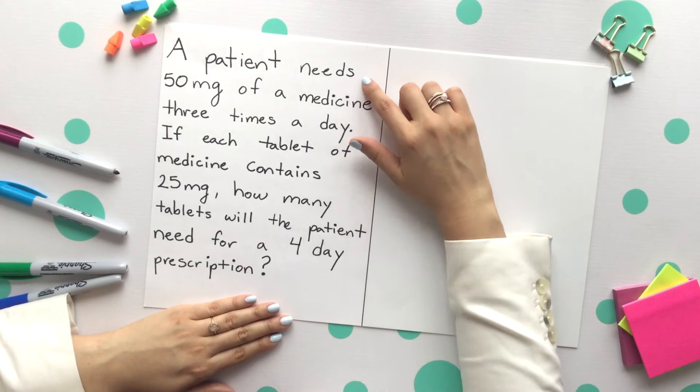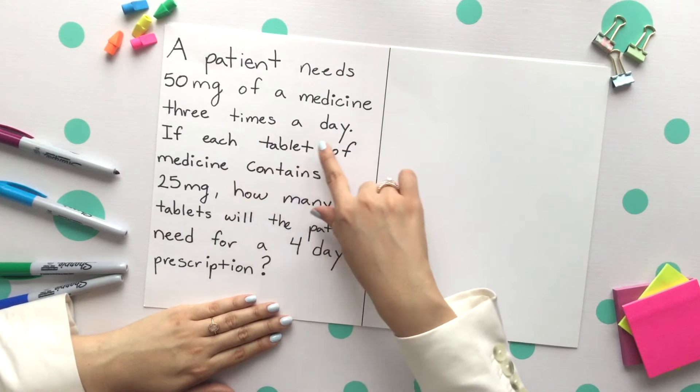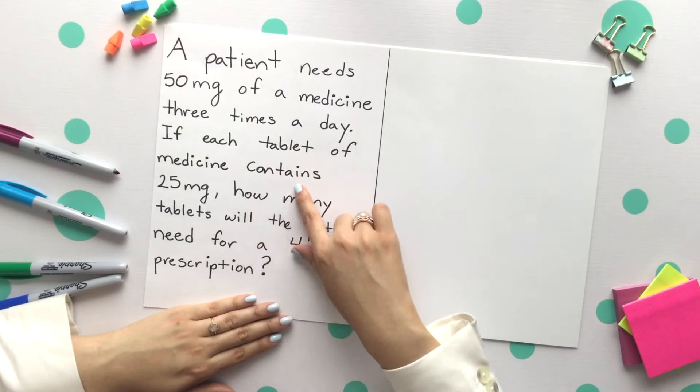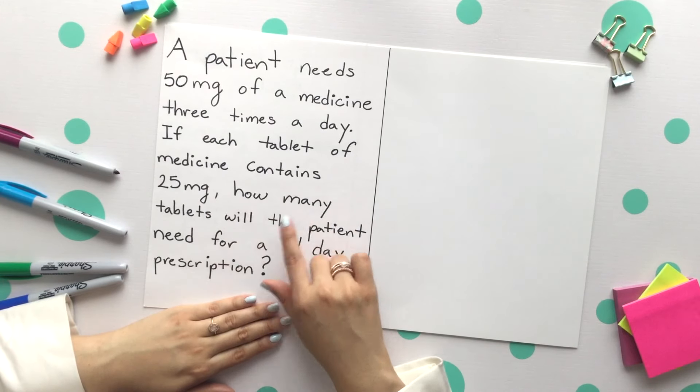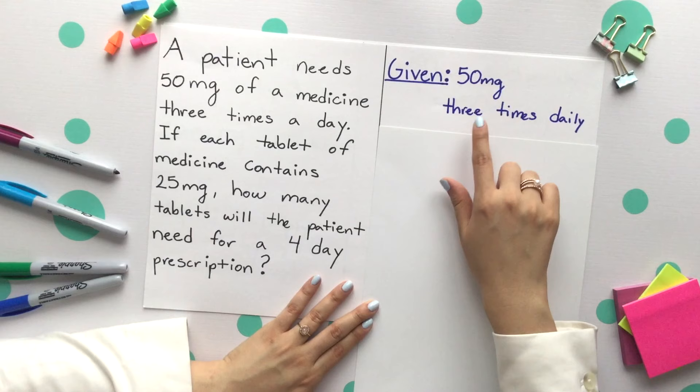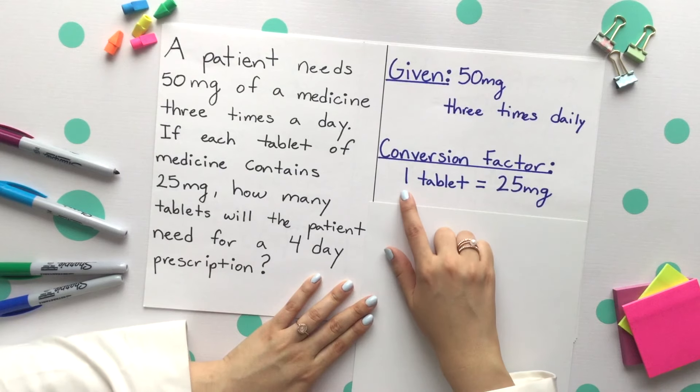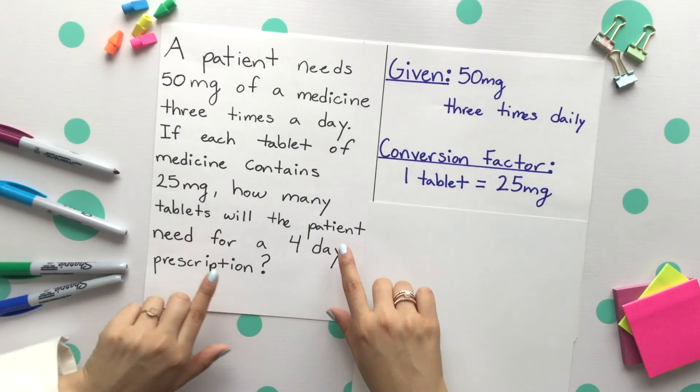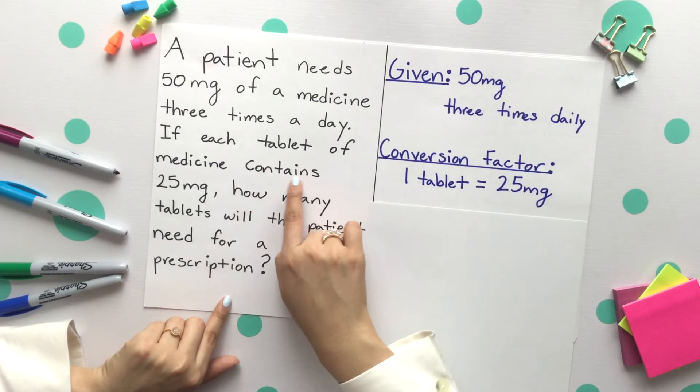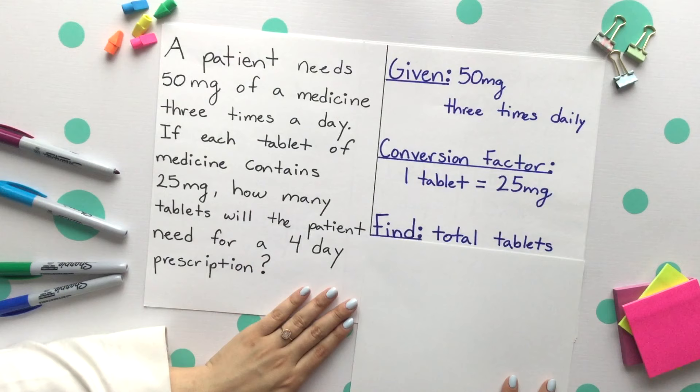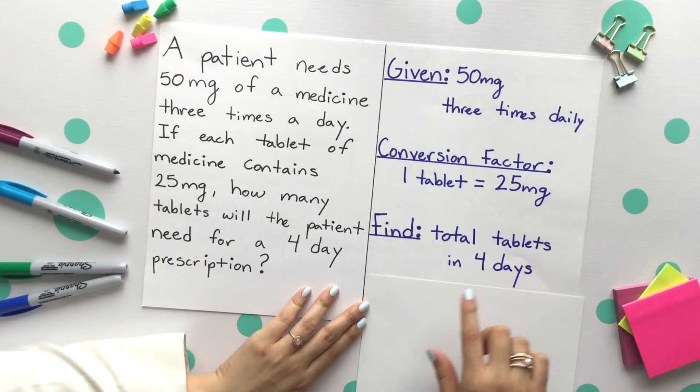Let's look at our last example. A patient needs 50 milligrams of a medicine three times a day. If each tablet of medicine contains 25 milligrams, how many tablets will the patient need for a four-day prescription? As always, you want to go ahead and start with identifying your given, conversion factor or factors, and what you are looking for. The given is that 50 milligrams three times every day. Conversion factor is that one tablet is equal to 25 milligrams where we saw that said each tablet of medicine contains 25 milligrams. And lastly, you are finding the total amount of tablets in that four-day prescription.